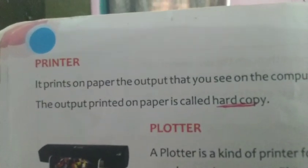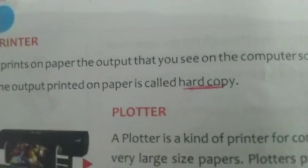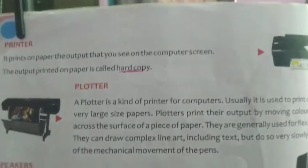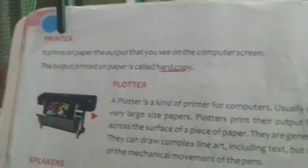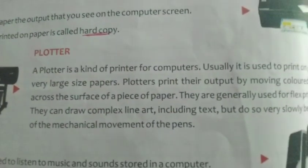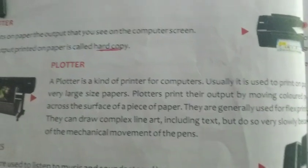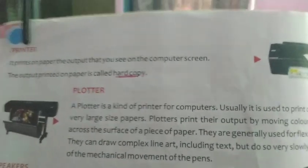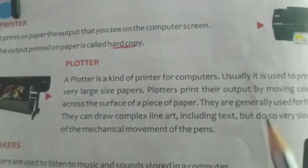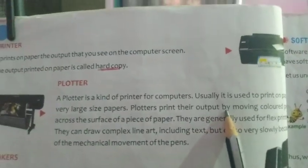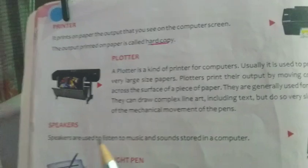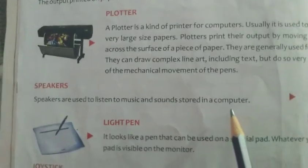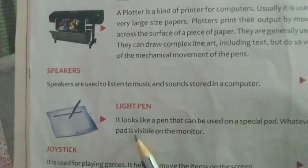Next is the printer. Whatever printout you get on paper is known as a hard copy. Next is the plotter, which is mainly used to create banners for various companies, schools, colleges, advertisements, and the hoardings you see on the roadside — all created with the help of a plotter. It is a bigger-size printer. The speaker is there so you can hear music.